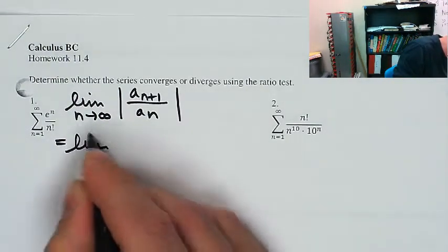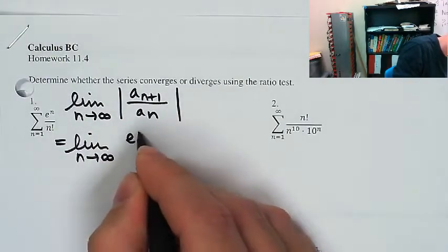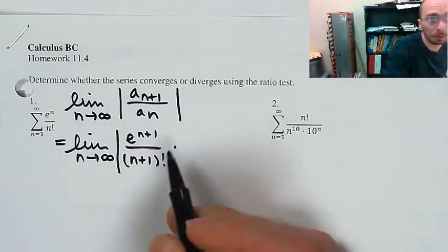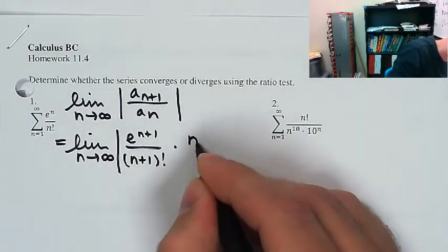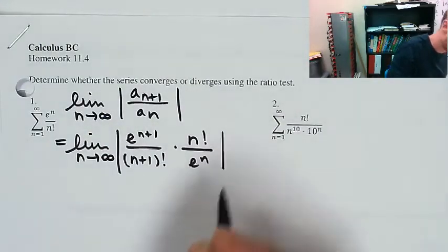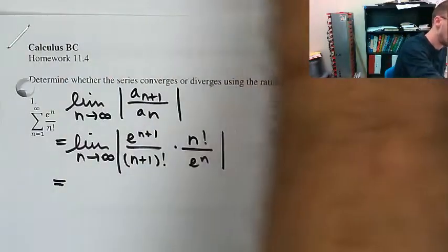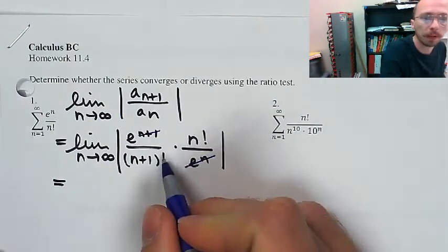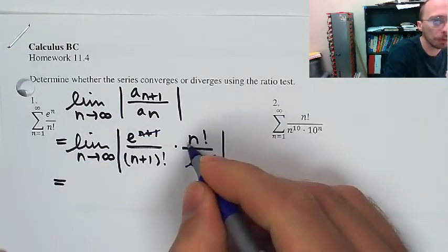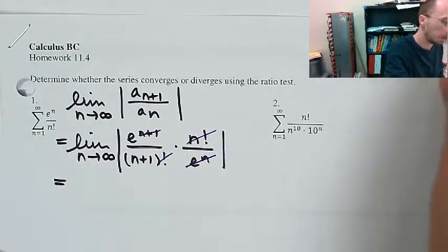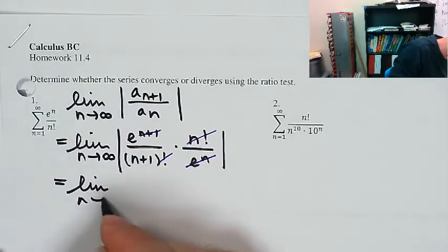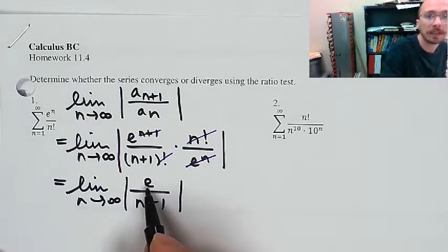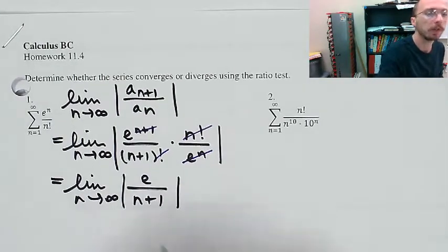This is going to be the limit as n approaches infinity of e to the n plus 1 — we start off by plugging in n plus 1 — divided by n plus 1 factorial, times the reciprocal of a_n. I know what's going to happen here when I cancel stuff off. n factorial divided by n plus 1 factorial — well, n plus 1 factorial is n plus 1 times n factorial — so I'm left with the limit as n approaches infinity of e over n plus 1. As n approaches infinity, e stays the same; it's still between 2 and 3, and n plus 1 goes to infinity, so this fraction goes to 0.